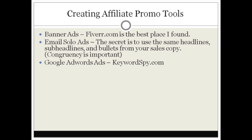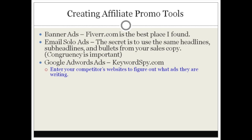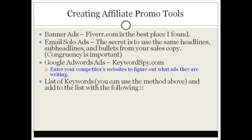Google AdWords ads are another affiliate promotional tool you can create for affiliates who want to promote your product using pay-per-click marketing. A great tool for creating these ads is KeywordSpy.com or SpyFu.com. Simply find your competitors, enter their domain name into KeywordSpy.com, or use keywords related to your product, and you'll see what your competitors are running in terms of pay-per-click ads. Don't necessarily copy them, but use similar keywords, rewrite the ad, and create some ads so your affiliates have something in hand.